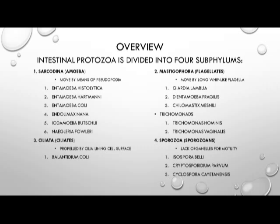The second subphylum is Mastigophora, or the flagellates, and they move by long whip-like flagella. The organisms in this subphylum include Giardia lamblia, Dientamoeba fragilis, and Chilomastix mesnili. A second group also belonging to Mastigophora are the trichomonads, and these include Trichomonas hominis and Trichomonas vaginalis.